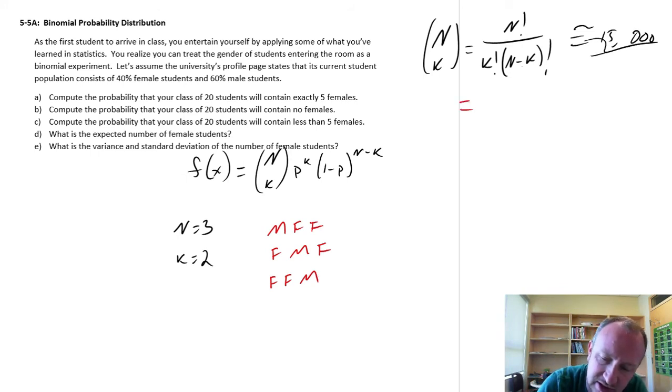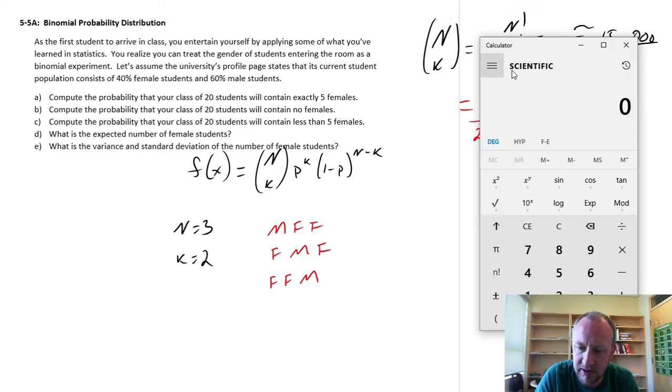If we entered these values into our formula, 3 factorial divided by 2 factorial times (3 minus 2), so 1 factorial.